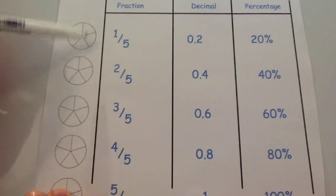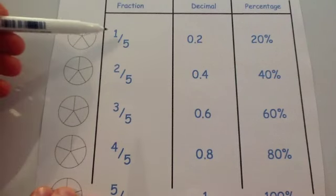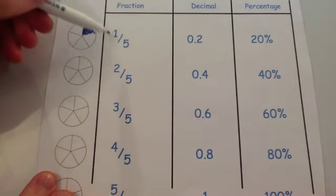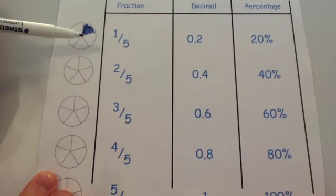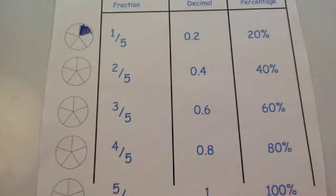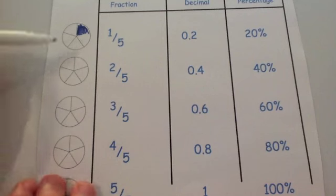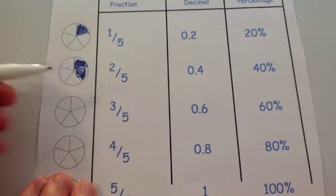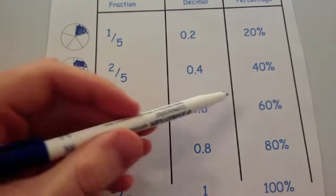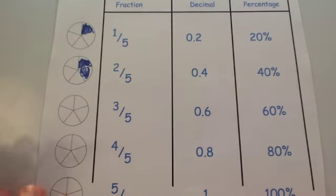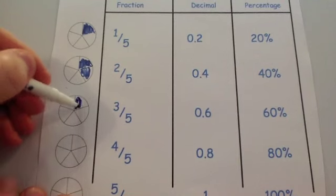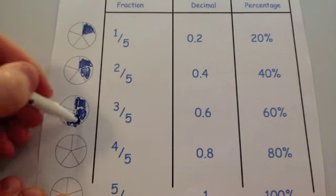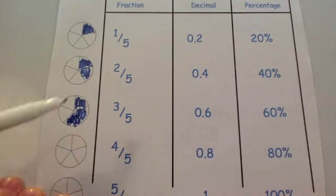One fifth is one out of the five sections. One divided by five gives 0.2, so one fifth equals 0.2 and that's 20%. Two fifths is two out of five: two divided by five is 0.4, which is 40%. Three fifths is three out of the five sections, which gives 0.6 or 60%.